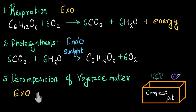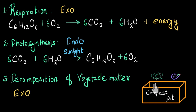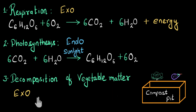The way I like to remember this: when you throw away vegetable matter, it decomposes and becomes manure or fertilizer. Fertilizers basically give energy to plants. So in this process, energy is being released — and that's how I remember that decomposition of vegetable matter is an exothermic process.